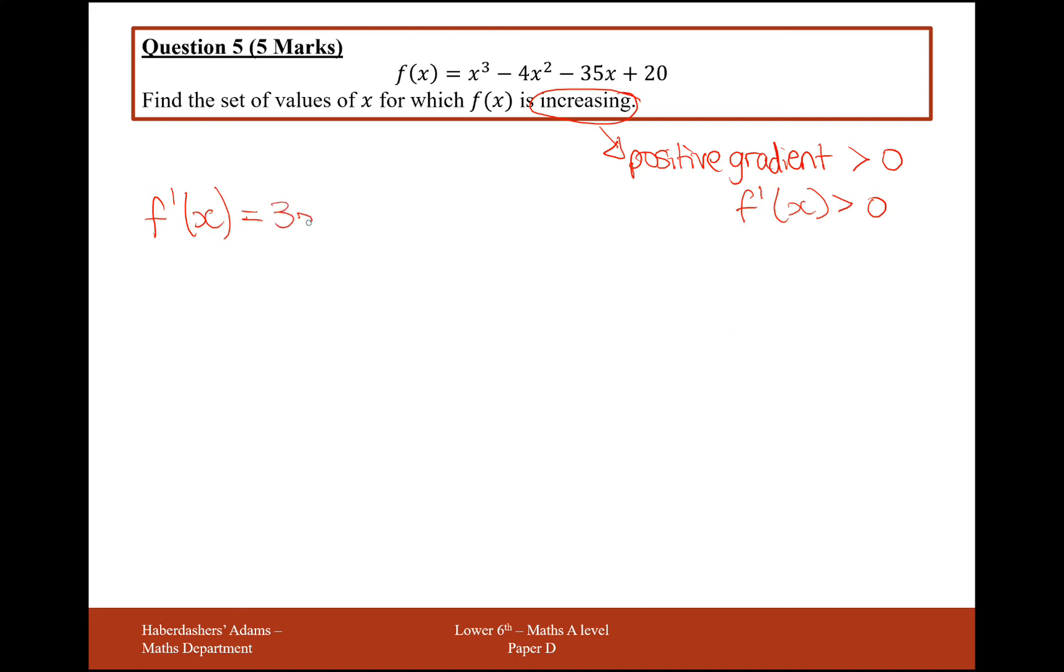So differentiating we get 3x squared minus 8x minus 35, and we want for this to be greater than 0.